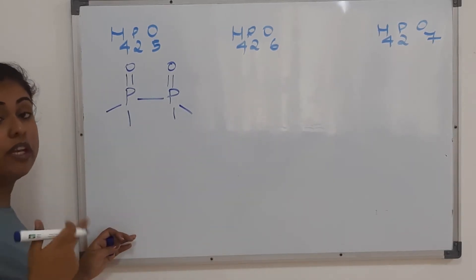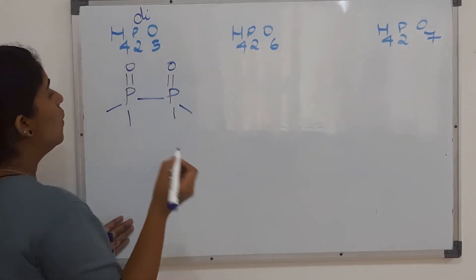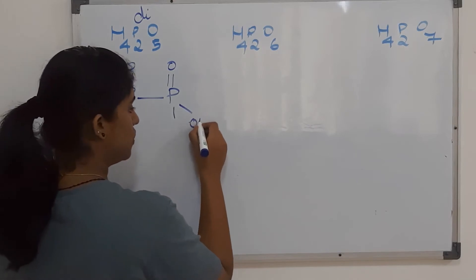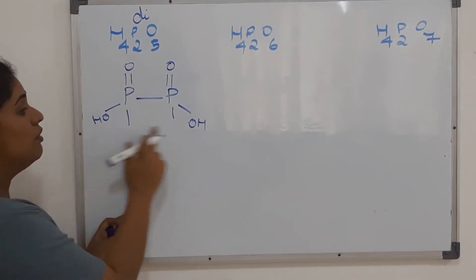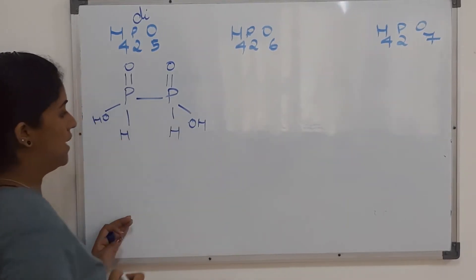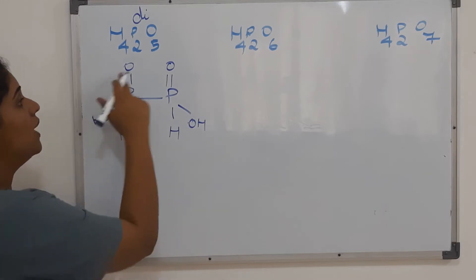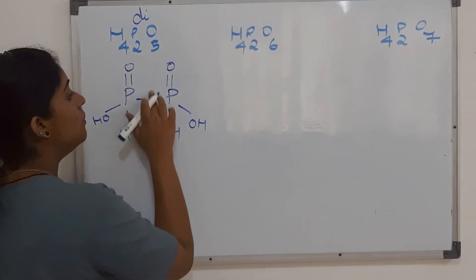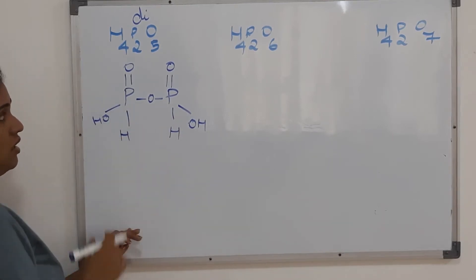To fill the remaining bonds we need to know the basicity. H₄P₂O₅ is dibasic, meaning it has two OH units — one goes to the first phosphorus and the other to the second. Comparing with the formula, out of four hydrogens only two are satisfied, so the remaining two hydrogens go as P–H bonds on the two phosphorus atoms. Counting the oxygens, we have four in the structure but need five, so the extra oxygen goes in between the two phosphorus atoms as a P–O–P unit.